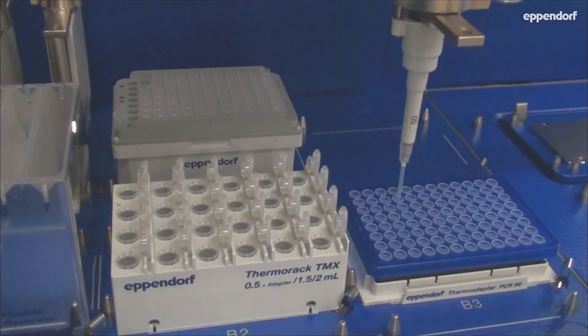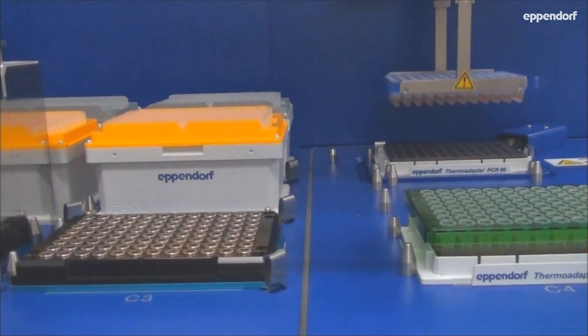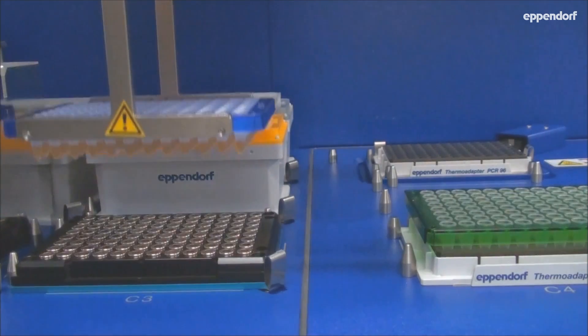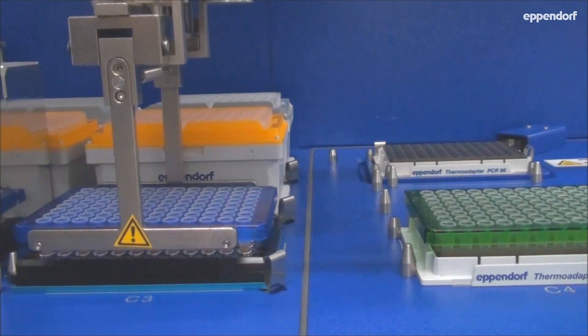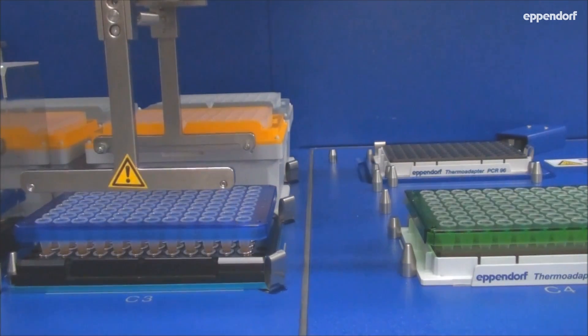Each segment of the sample preparation includes the magnetic bead purification step. During the purification, the sample plate is transferred to a magnet where the beads can be pelleted, washed, and eluted from.